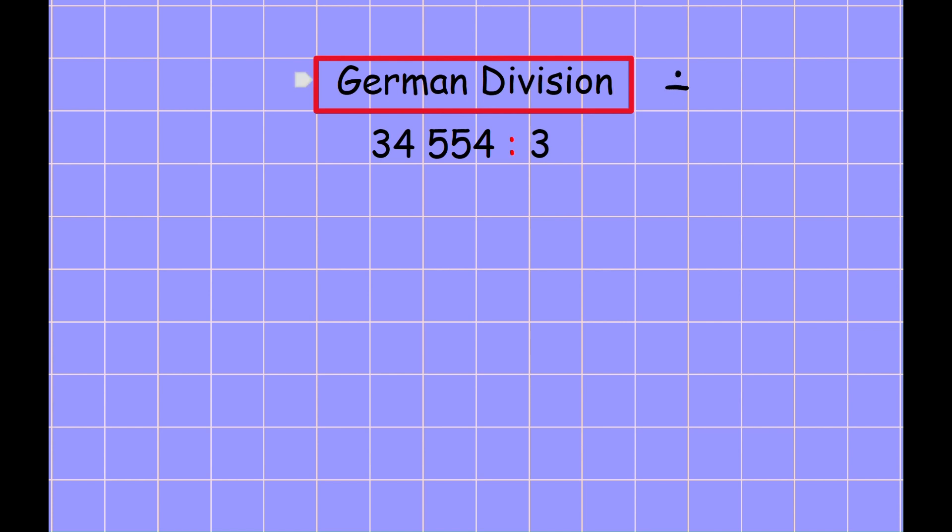The division sign internationally we write like this, but in Germany we write two points for divided by. So this number 34,554 is divided by 3. Let me write it: three here, then five, five, and four.